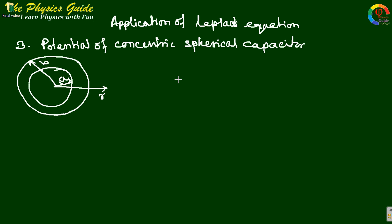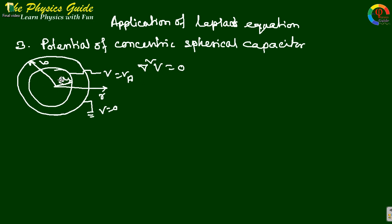I am going to find the potential of a concentric spherical capacitor using the Laplace equation. This is an application of the Laplace equation: del-squared V equals zero, where del is the operator and V is the potential. We construct a spherical capacitor using two concentric spheres — inner radius a and outer radius b. The outer sphere is grounded (V=0 at r=b) and the inner sphere is given potential Va. This system forms a capacitor, and we will find the potential distribution using the Laplace equation.